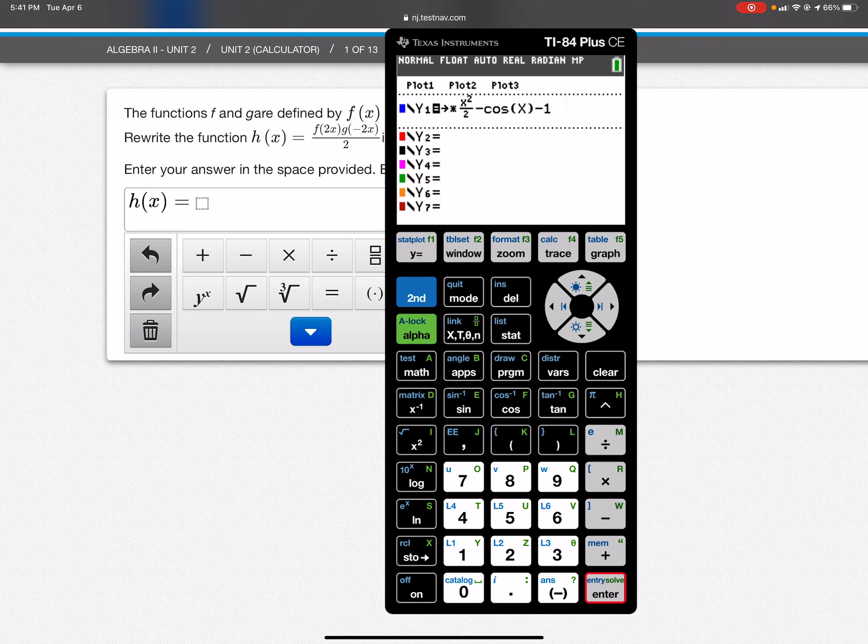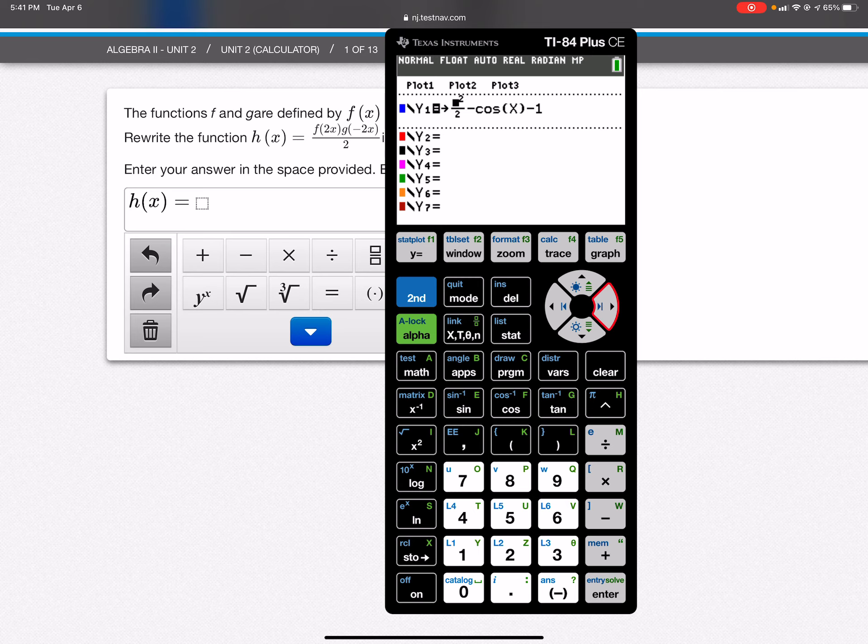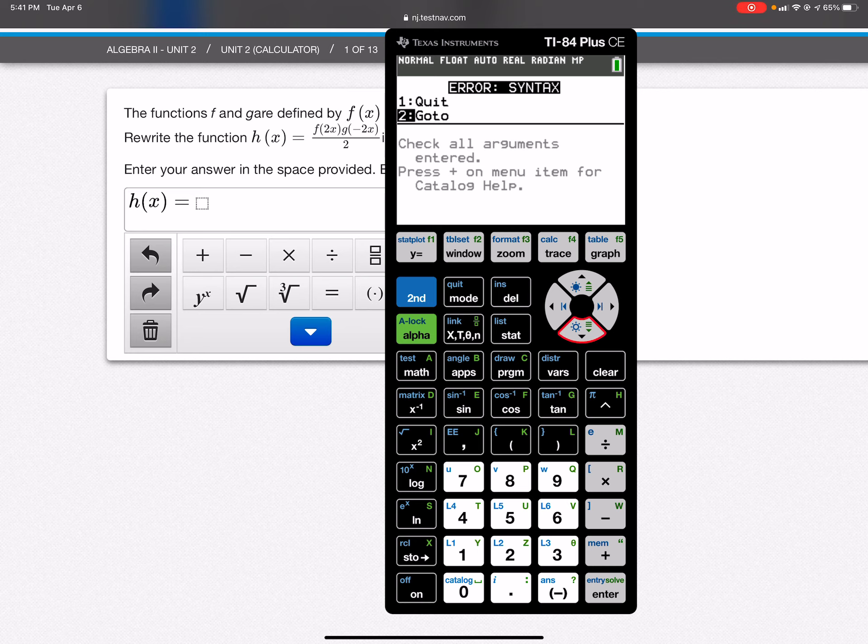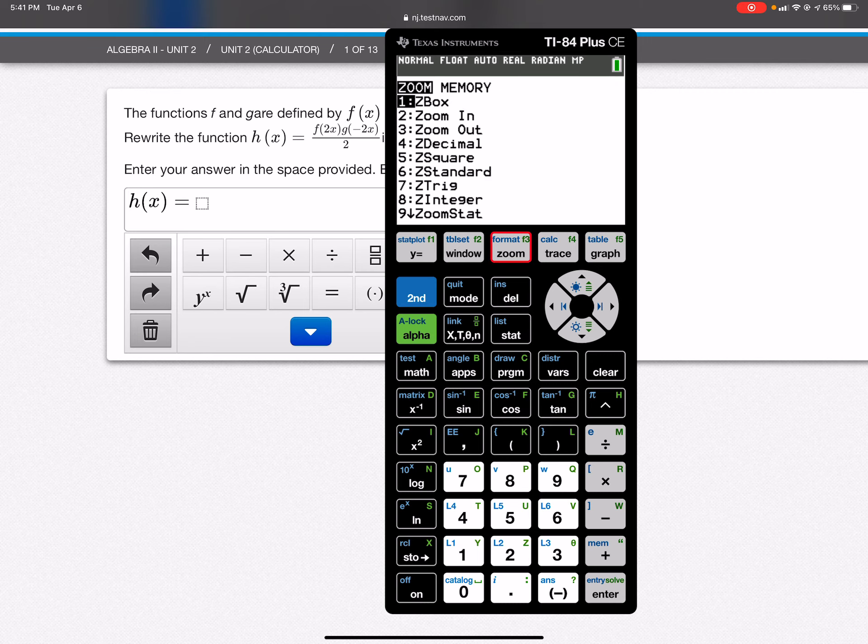I messed up somewhere here. That shouldn't be there. Let's try this again. I thought I got rid of that. What's going on? Why does it keep putting that there? Let's try it again. Let's zoom 0. There we go, that's much better.